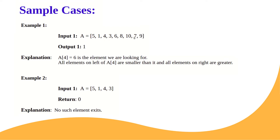Example 1: array is [5, 1, 4, 3, 6, 8, 10, 7, 9], output is 1. The explanation: a[4] equals 6. All elements to the left of 6 — which are 5, 1, 4, 3 — are smaller than 6. All elements to the right — 8, 10, 7, 9 — are greater than it. So 6 is at its perfect place; it is the peak element.